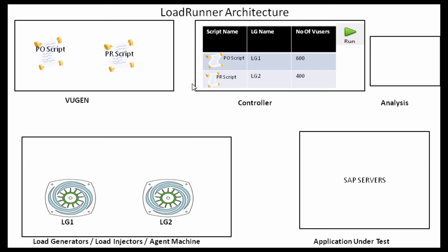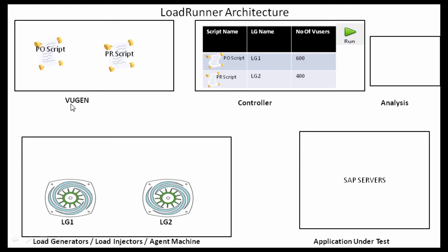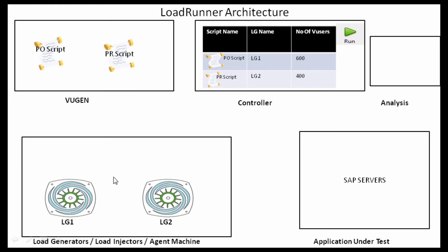Since you already know LoadRunner, you would know there are multiple components to this tool. They are VUgen or Virtual User Generator, the Controller, Analysis, and Load Generators. Some people call them injectors or agent machines. Typically you would have one LG, but you could have more than one load generator. So these are the full components of LoadRunner. Let's see the purpose of each component and how they interact with each other.